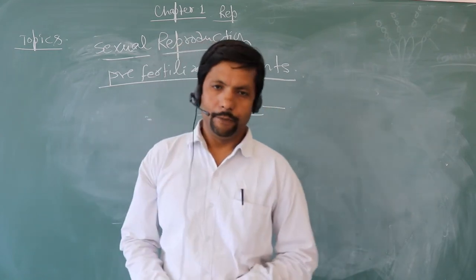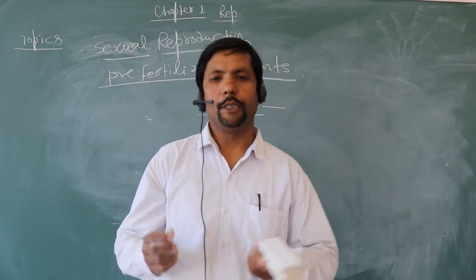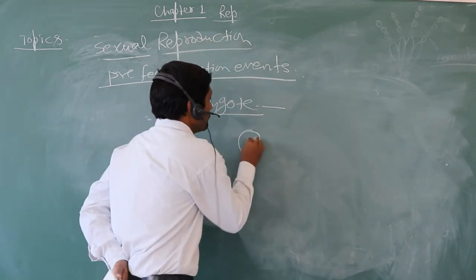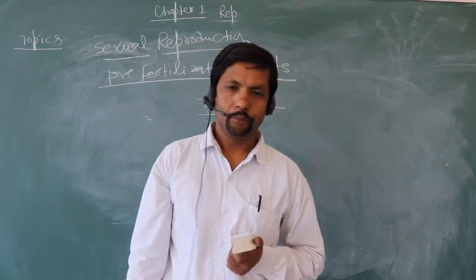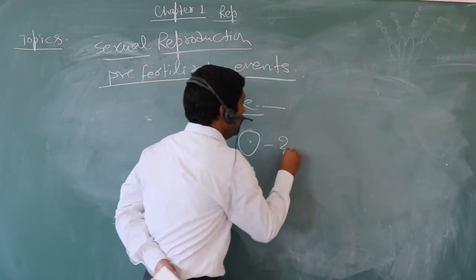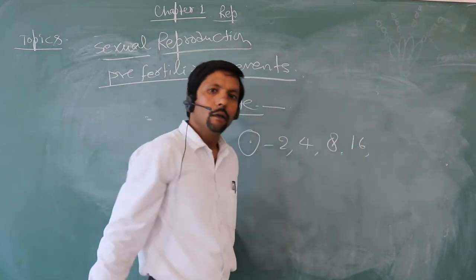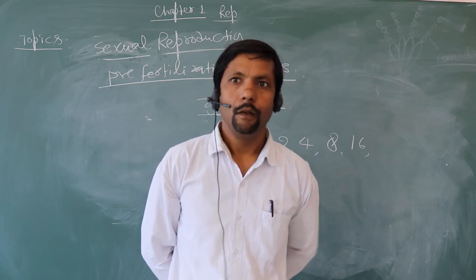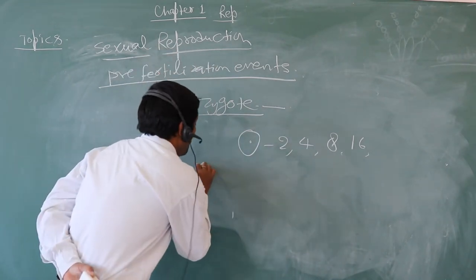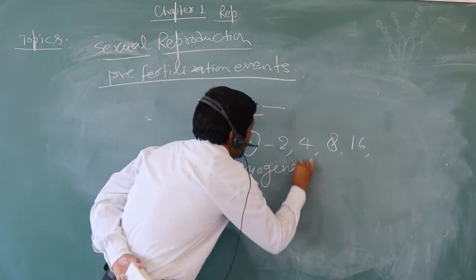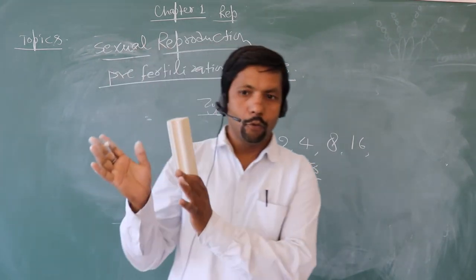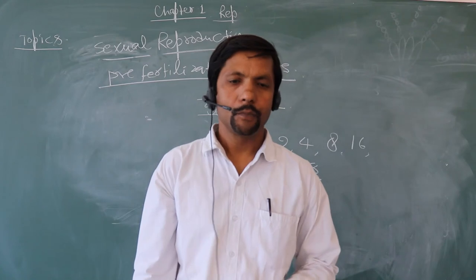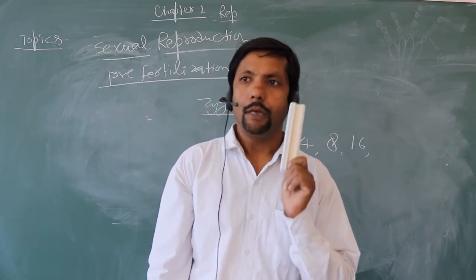When the zygote undergoes cell division and differentiation, it develops into an embryo. For example, in human beings, the single cell first divides into 2, 4, 8, 16, 32 cells — a 32-cell stage that gets implanted into the uterus of the female body and grows into the embryo. The growth and different stages of the embryo is called embryogenesis. The development of the embryo is called embryogenesis.